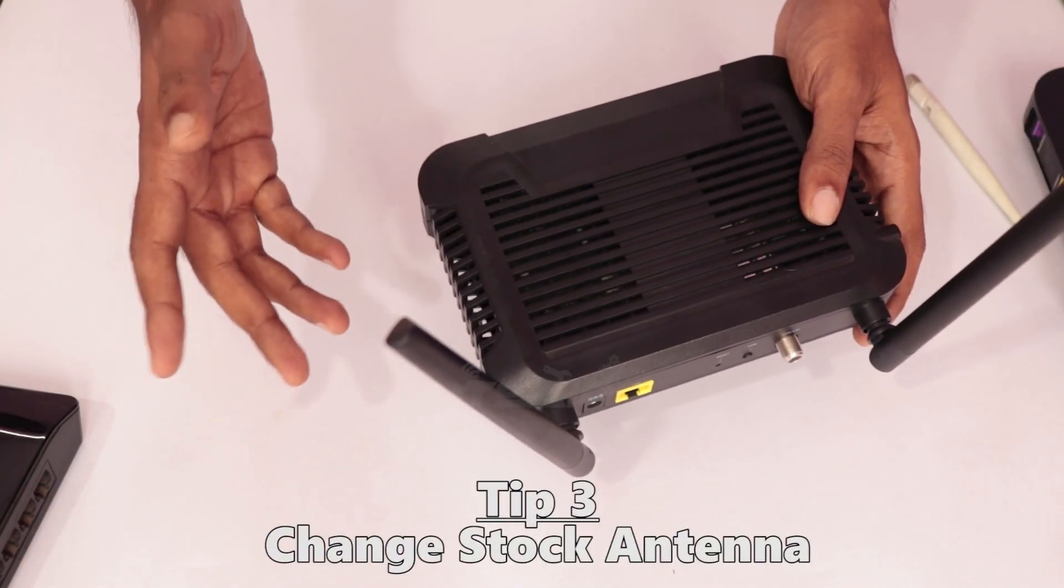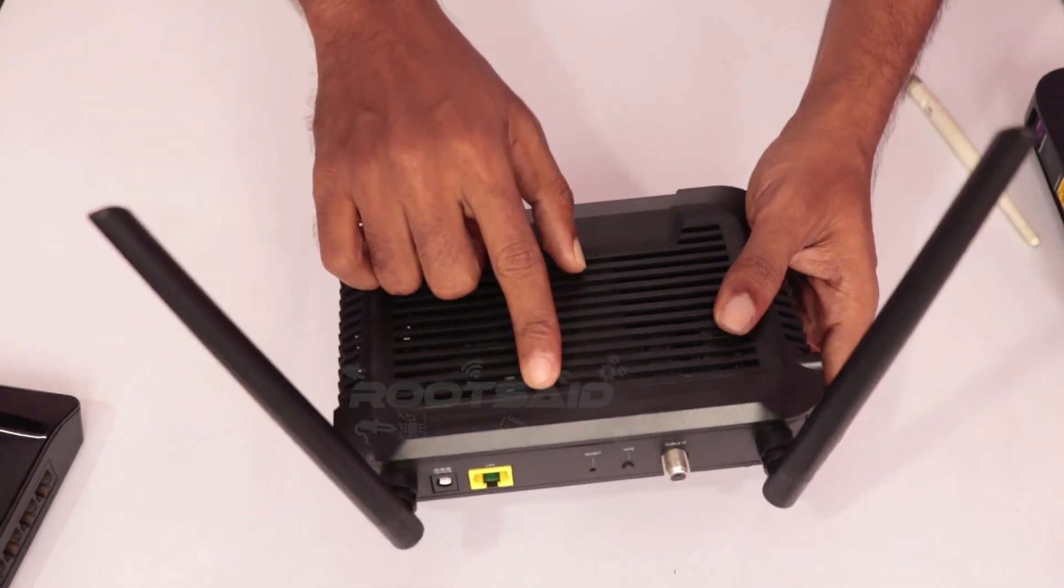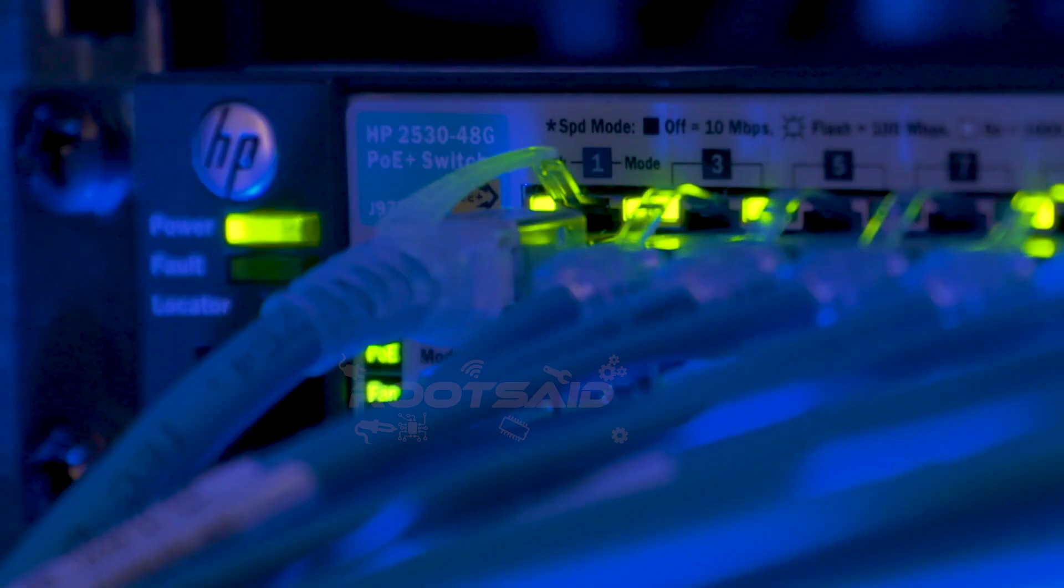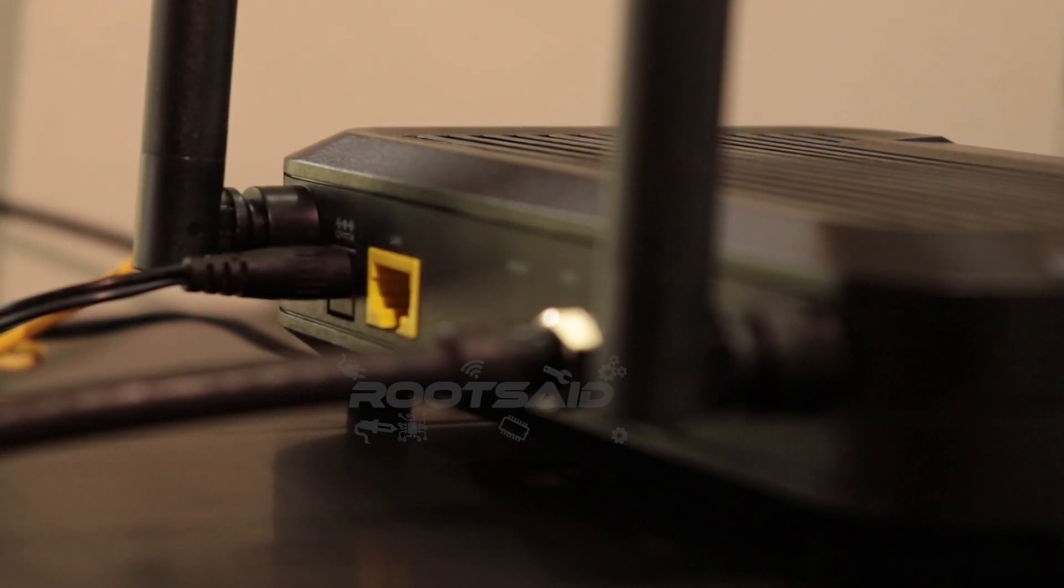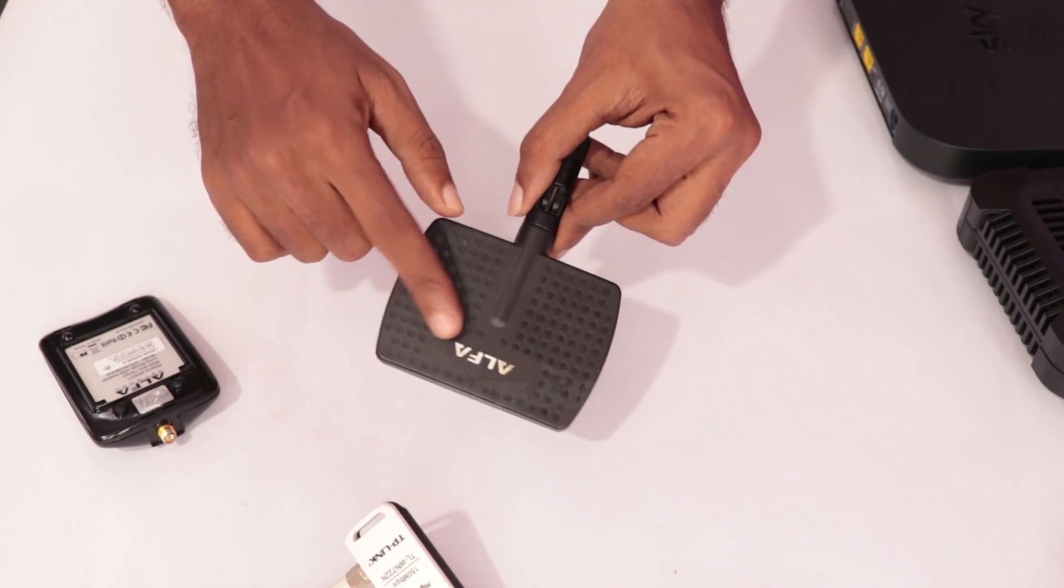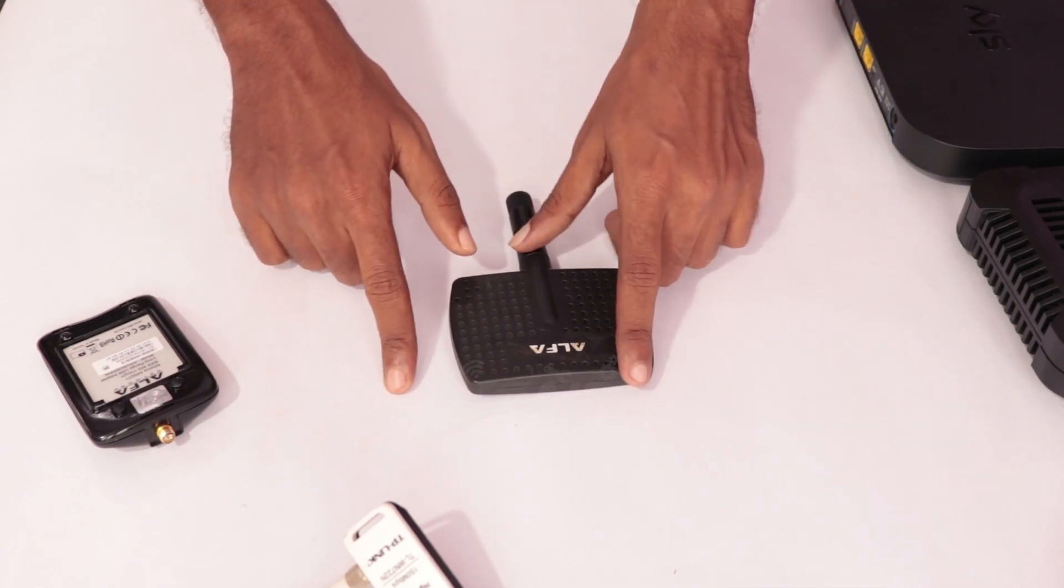Usually, the wifi router antennas provided by the manufacturers will be having 5dBi or 7dBi power gain, which is very low when compared to currently available antennas on the market. Some of the wifi routers allow you to change the stock antenna that comes with the router. So, if your router does support removable antennas, you can get a higher gain antenna like a 12dBi or a 20dBi.